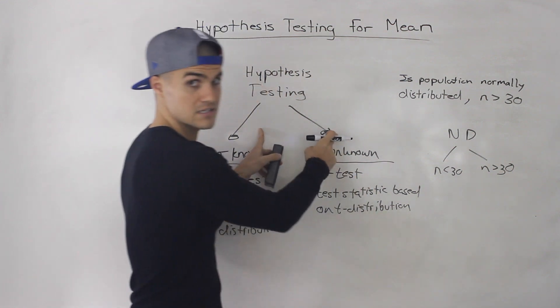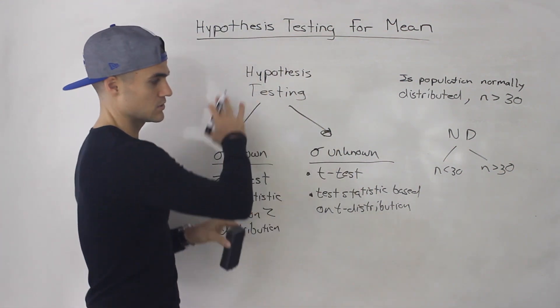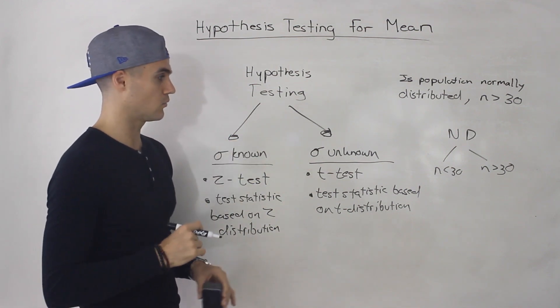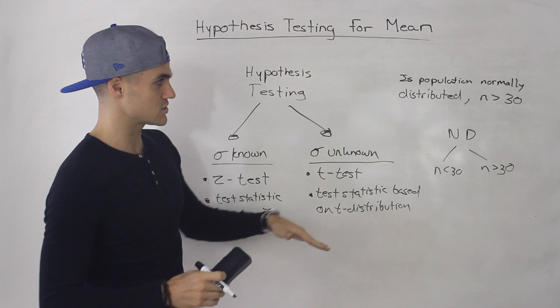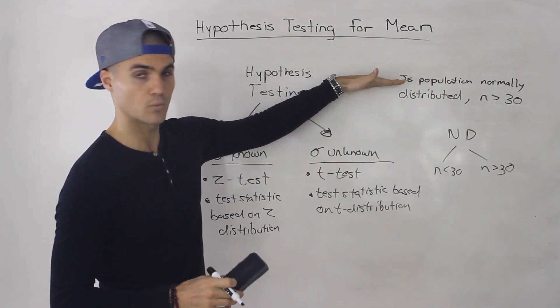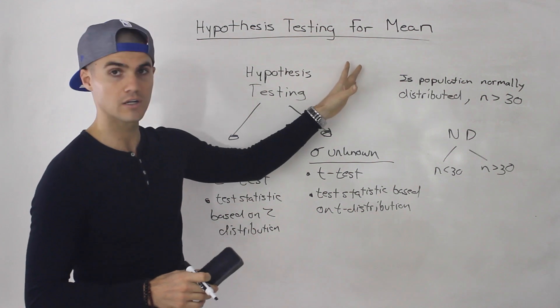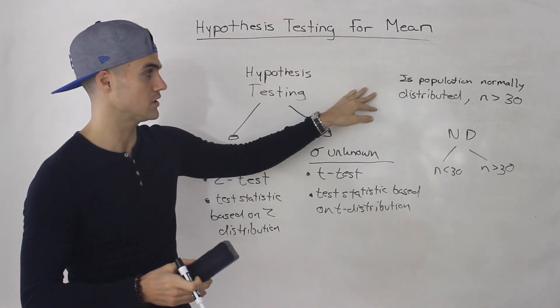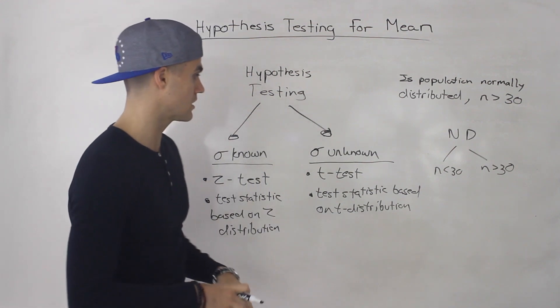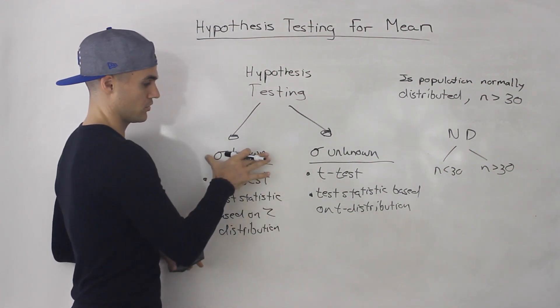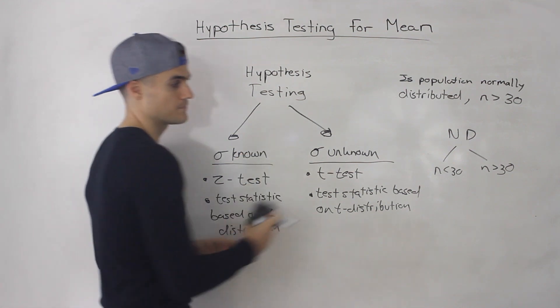And then from there, you have this decision checkpoint. So make sure that you adjust this depending on what your prof wants. But when I'm talking about this here, I'm assuming that we've passed those checkpoints. So population is either normally distributed or assumed to be normally distributed, or the sample size is greater than 30. And then at that point, you're just checking, do you know the population standard deviation or do you not?